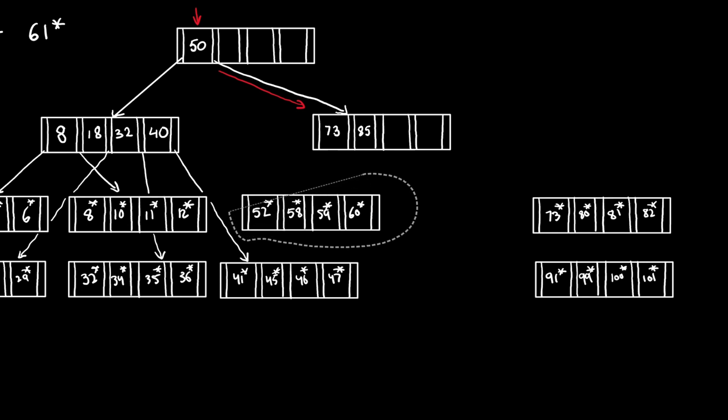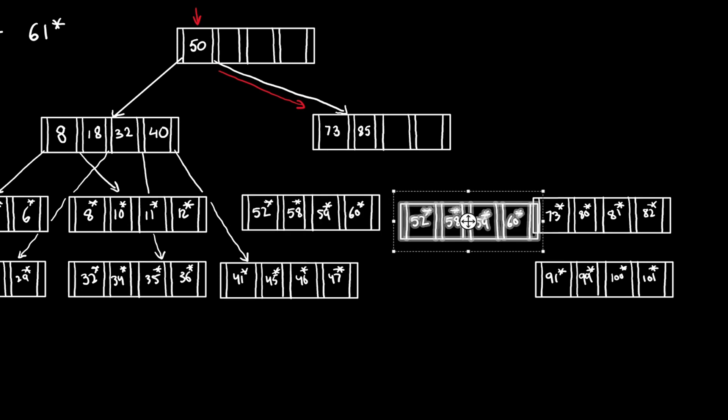We're going to create a new data entry and move half of the first entry's contents in there. Now, we can insert 61 at the end of the second entry.